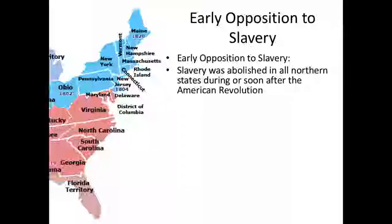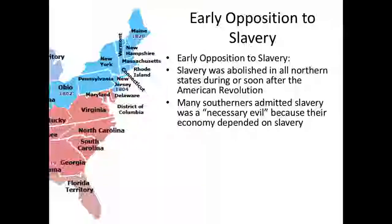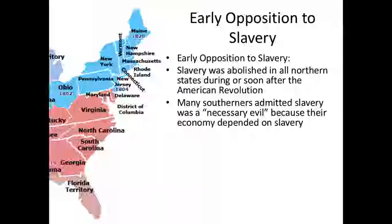Early on in the history of the United States, right after the American Revolution, slavery was abolished in all of the northern states north of Maryland and Delaware — basically where the Mason-Dixon line is, the border between Maryland and Pennsylvania. By the 1820s and 1830s, there was no more slavery in the northern states, and it had been banned in the Northwest Territory according to the Northwest Ordinance.